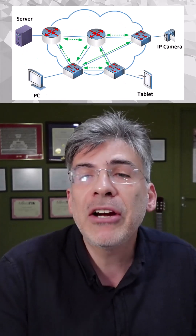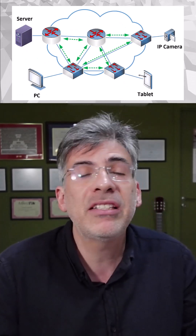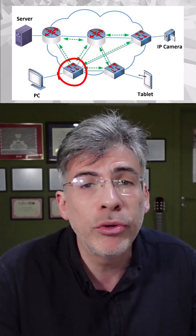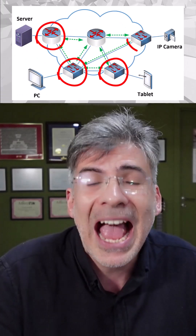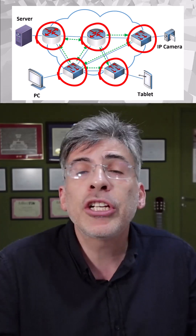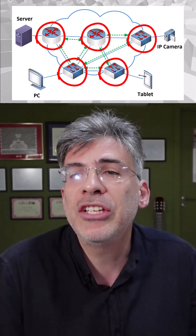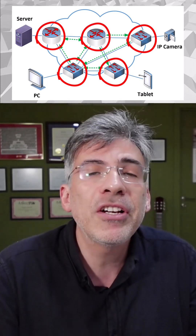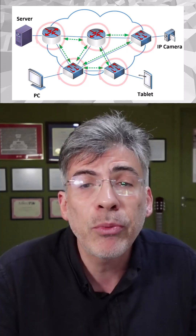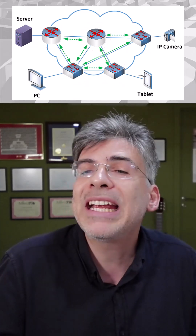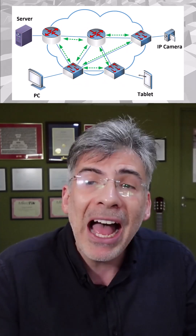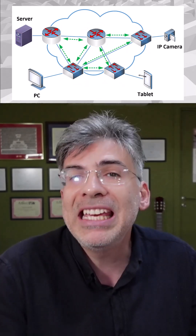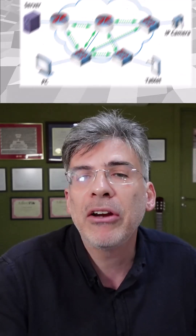The control plane is used to allow intermediary network devices such as switches, routers, firewalls, and access points to communicate control information with each other to ensure the correct functionality of the network. This control data is generated by and destined to these intermediary network devices.